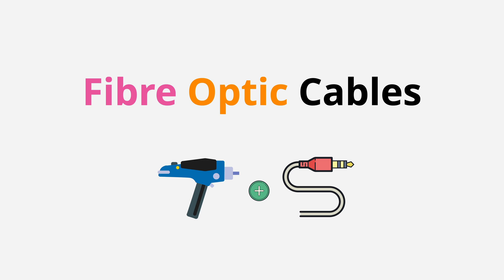Welcome back. In this lesson I want to talk in a little bit of detail about fibre optic cables. If you're involved with networking in any way, then you need to be comfortable with how they work, their characteristics, and the differences between the various types. Now this matters for the real world, and if you need to work with any physical networking services, including AWS Direct Connect.